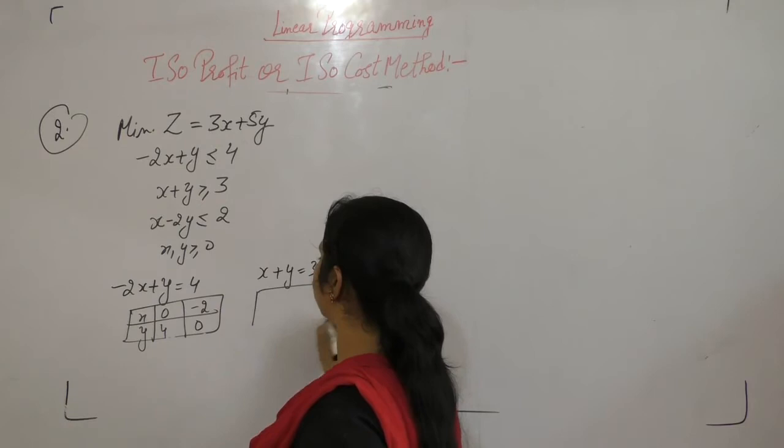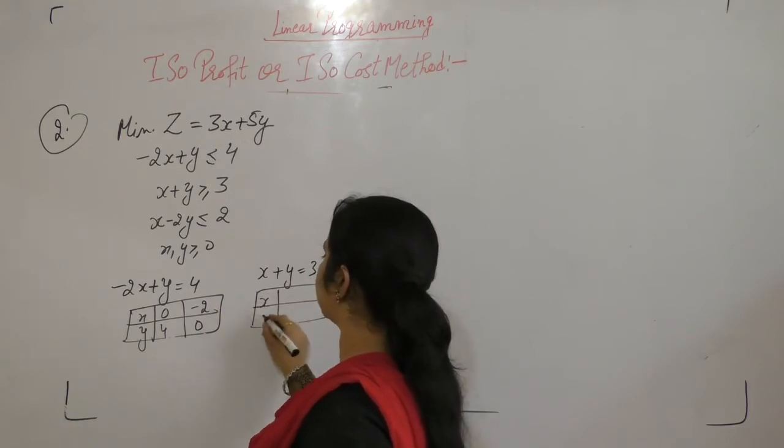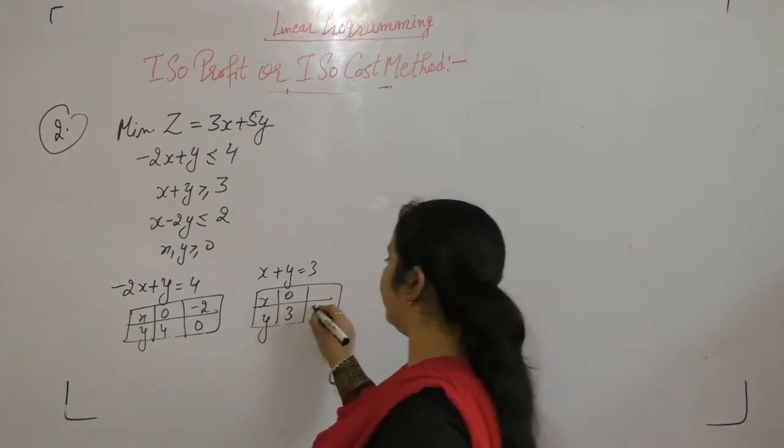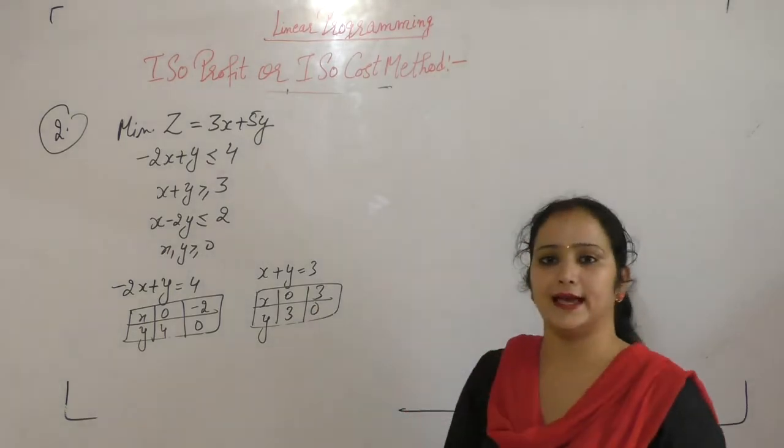x plus y equals 3. When x is 0, y is 3, and when y is 0, then x is 3.